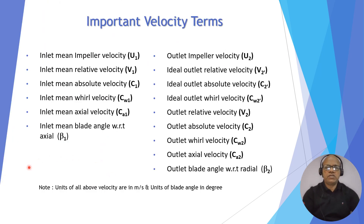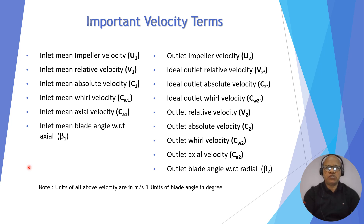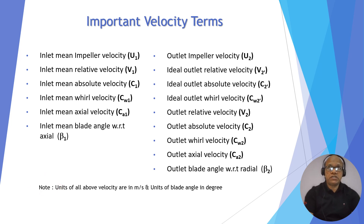These are the velocity terms used for the velocity triangle. The inlet velocity triangle is drawn at the inlet mean diameter and has suffix 1. In the case of the outlet velocity triangle, it has suffix 2, and for the ideal case, it is shown as 2-dash. All velocity terms are in meters per second and blade angle is in degrees.